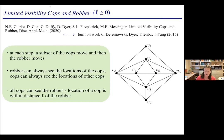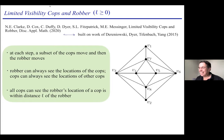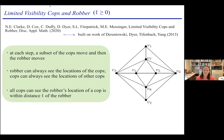In cops and robbers games, cops are initially placed on some vertices of a graph, then the robber chooses a vertex to start. At each step, cops move, then the robber moves. The robber can always see the location of the cops; the cops know where all other cops are — they have walkie-talkies and can coordinate strategy. The key idea here is the cops can only see the location of the robber if they're within distance L. If one cop is within distance L of the robber, that cop sees the robber and radios the others.